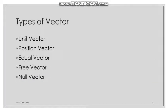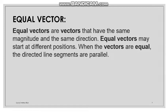Now, types of vectors. We have unit vector, position vector, equal vector, free vector, and null vector. An equal vector is a vector that has the same magnitude and direction as another vector.